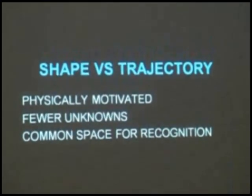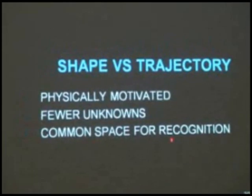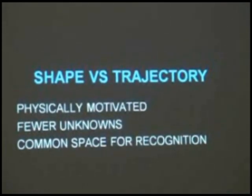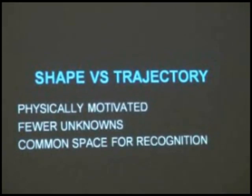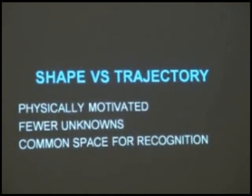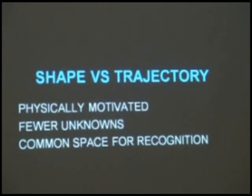Trajectory bases are physically motivated and therefore exploit a much more ubiquitous property of structure. There are fewer unknowns to estimate, giving much more stable estimation. Also, because you have the same bases for all actions, you can use this as an action recognition scheme: if I was walking, my coefficients would be in the same basis space as if I was running or cycling. Therefore there is a hope that all walking actions would cluster to the same location in that space, and one can do action recognition in 3D based only on 2D data.